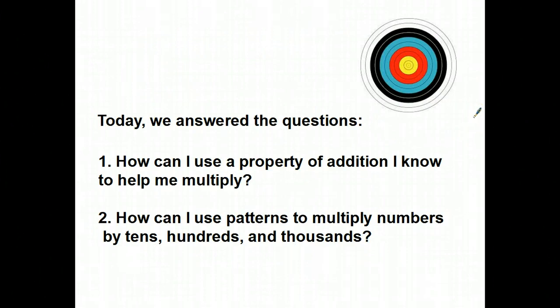So, what did we learn today? Well, we learned how you can use a property of addition to help you multiply. That 2 plus 3 is the same as 3 plus 2. And that 2 times 3 will give you the same total as 3 times 2. How can I use patterns to multiply numbers by tens, hundreds, and thousands? You just wrote a rule for that in your notebook. If you have questions about the questions, jot them down, and we will deal with that tomorrow.